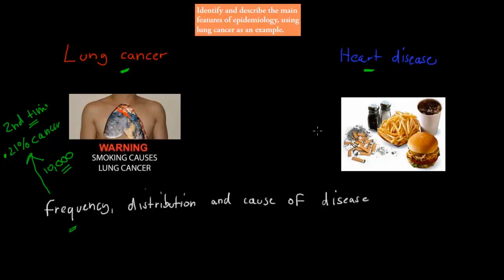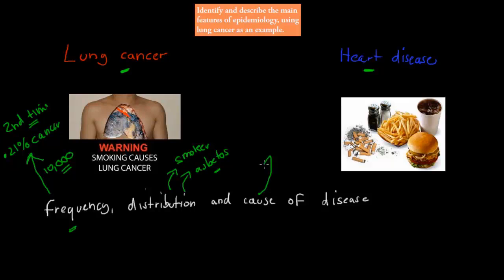What do we know about distribution of heart disease or lung cancer? We know that smokers seem to have more lung cancer than non-smokers, and that people dealing with asbestos quite often have a higher risk of lung cancer. That's the distribution — who has lung cancer. And we can also figure out the cause. For example, we know that smoking is a major cause of lung cancer. So the next question is: if we know all this, how do we know that? How have we figured out these different factors that lead to lung cancer?